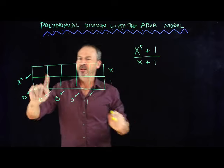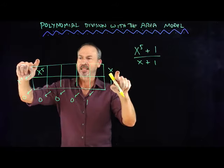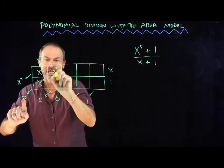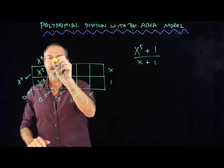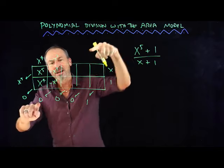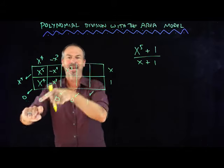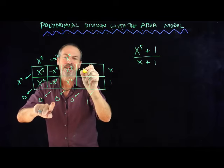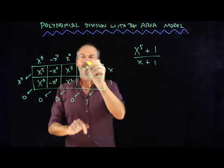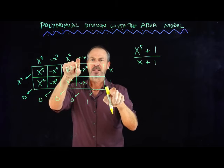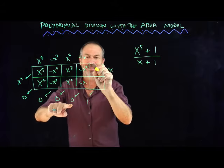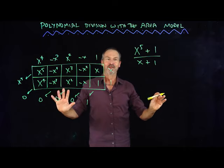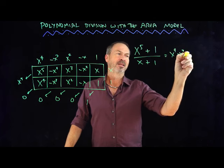Now we get to play the logic game. That x⁵ could only have come from there. Something times x gave me x⁵, so that must be x⁴. I don't want any x⁴, so I'll undo that with a negative x⁴ on the other part of the diagonal, which means this must be negative x³. I want no x³ on the diagonal, so I need a positive x³ to cancel it — that means x². This must be x², and I want no x², so I put a negative x² to cancel out. Then negative x, and negative x times 1. But I want no x's, so I put an x there to cancel out, and then 1. Something times x is x, so there's a 1, and 1 times 1 is 1 — consistent and beautiful. So this equals x⁴ − x³ + x² − x + 1.